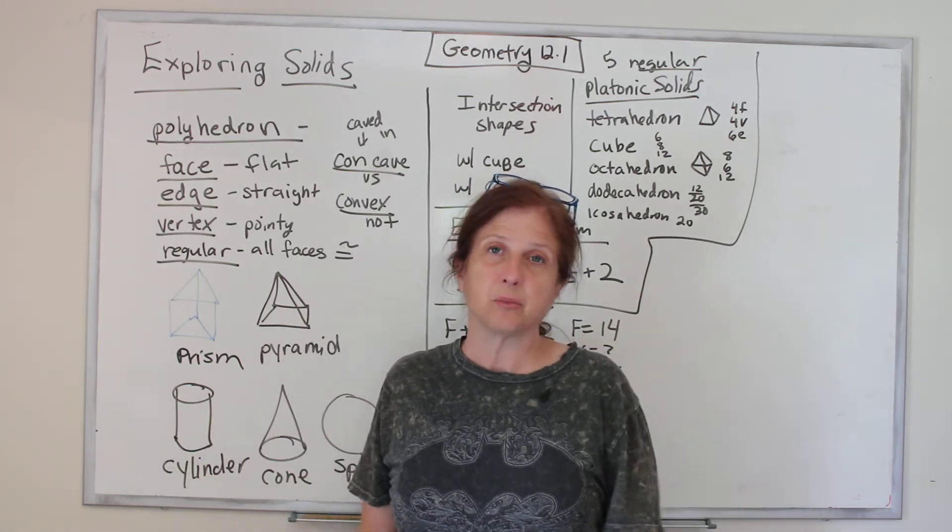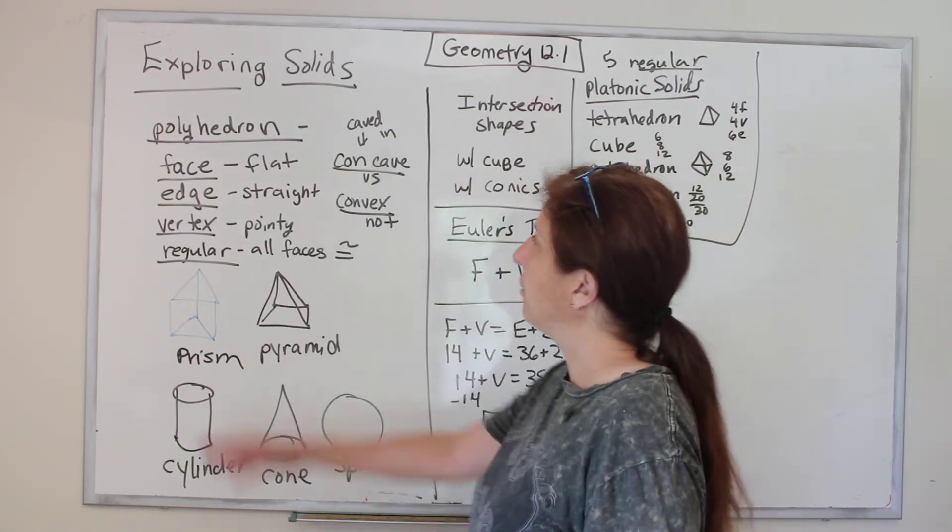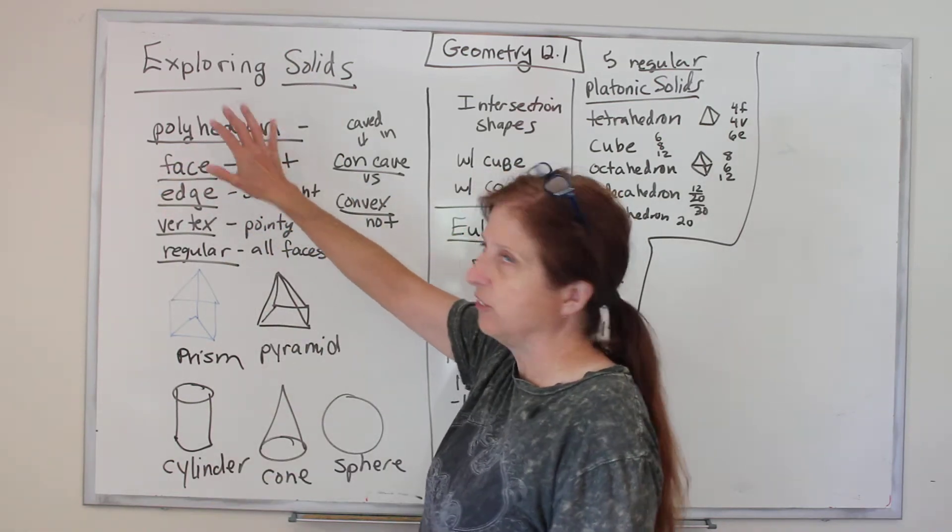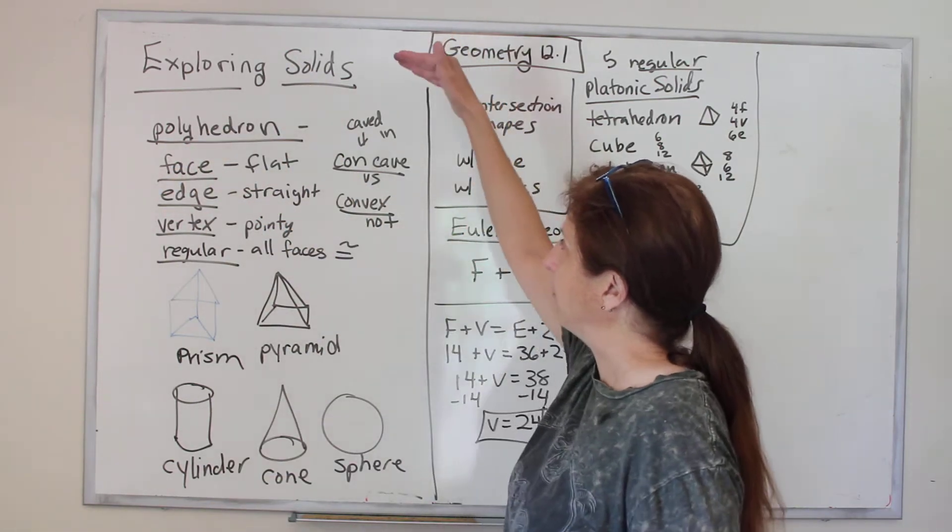Well, today we get to learn some shapes if you didn't know. So all of these solid shapes are called poly, for many, hedron—many-sided solid shapes.